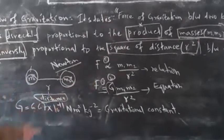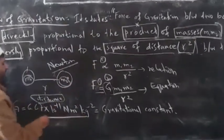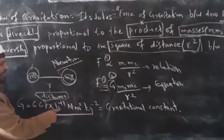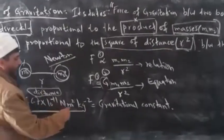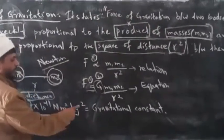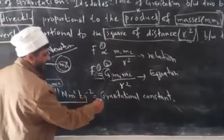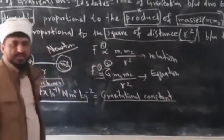The value of G is 6.67 × 10^-11, and the unit is Newton meter squared per kilogram squared. This is the gravitational constant.